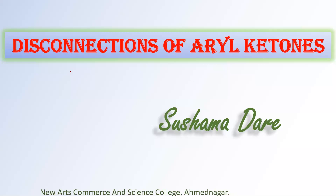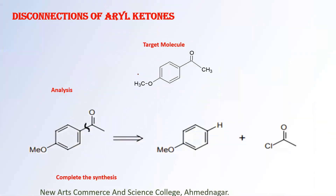Today I am talking about the disconnections of aryl ketones. The first example here. Now, for this target molecule, as we already discussed, whenever a target molecule is there, the first question you have to ask is: do you have a functional group? The answer is yes. Which functional group? It's a carbonyl functional group and an ether functional group. Among these two, we have to focus first on the carbonyl functional group.